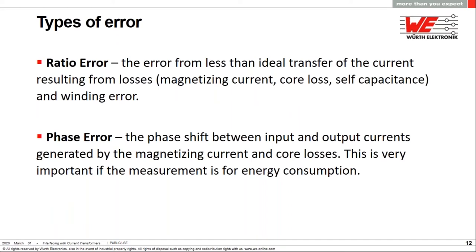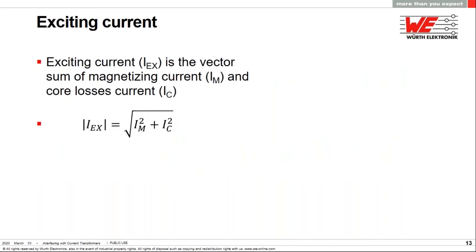So these two previous errors fall into two categories when applied to current sense transformers. The ratio error is the deviation from the ideal transfer of the primary current to the sense voltage. This is usually the main error of concern, except for power measurement applications where phase error becomes important. The proper voltage to current phase relationship is needed to accurately determine instantaneous power.